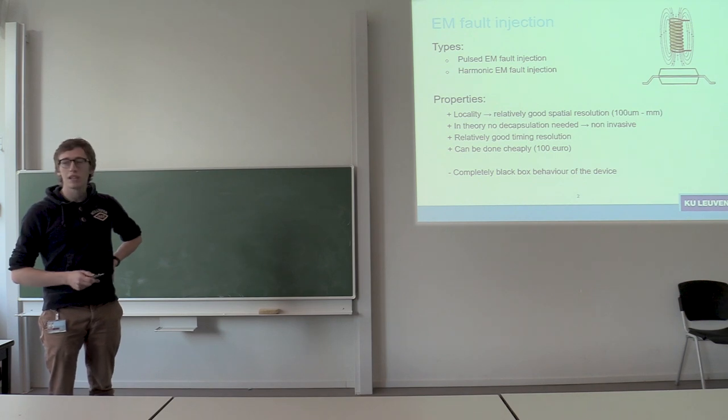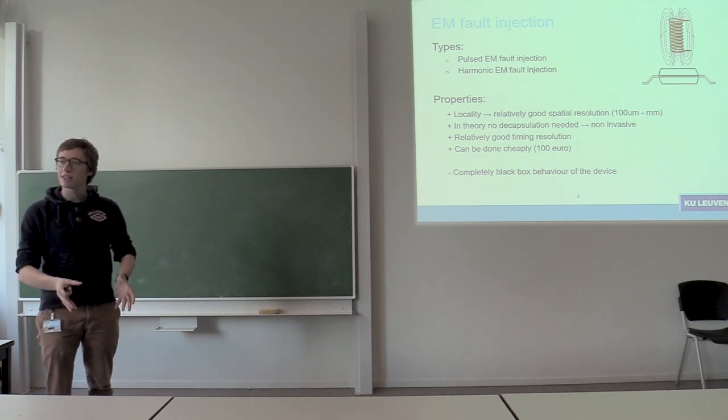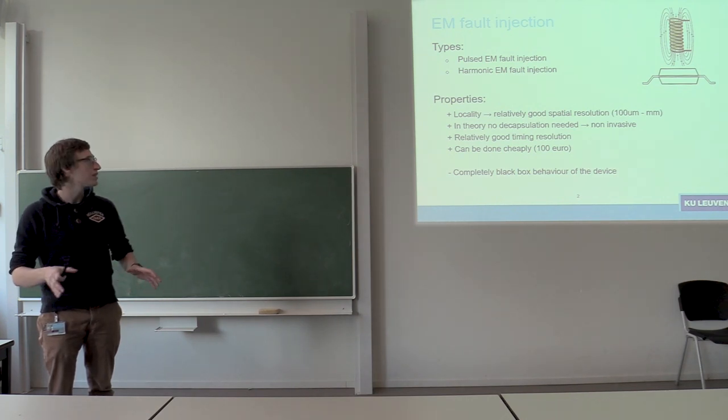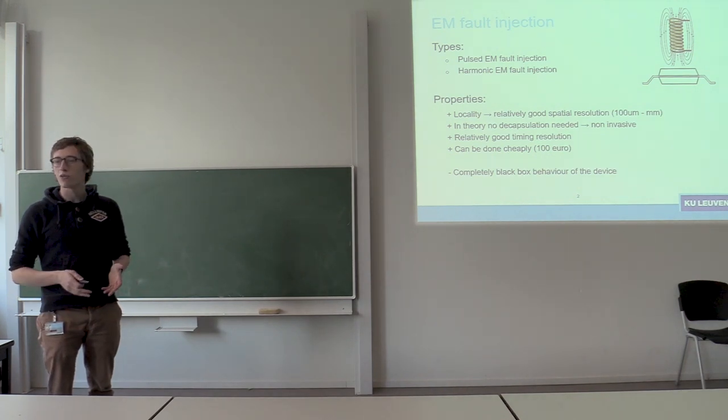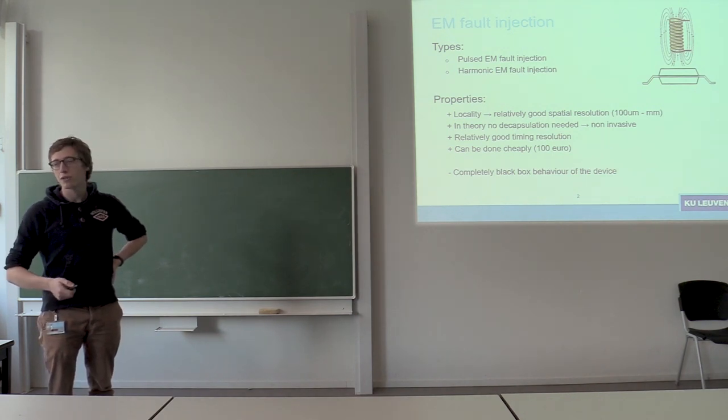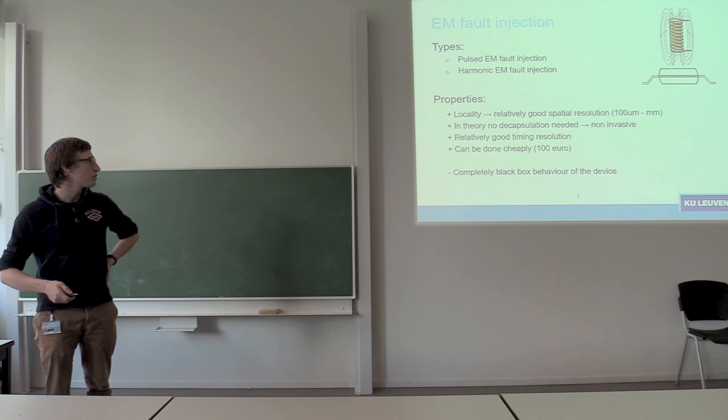The downside of using EM pulse injection is that you're emitting an EM field into your IC and it will propagate through all the metal layers and the bonding wires and your PCB. So you don't really have an idea of what exactly you're faulting. You're shooting at a certain area, a fault will occur, but you usually don't have a clue why.